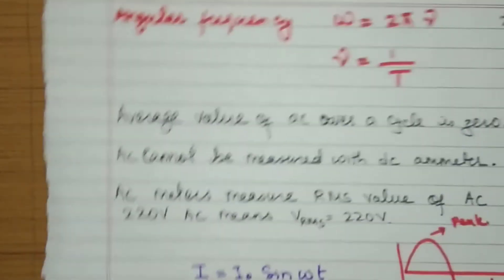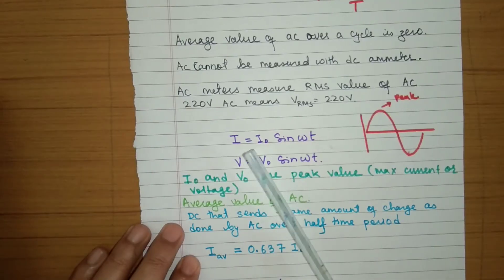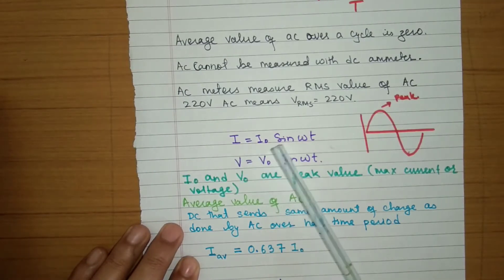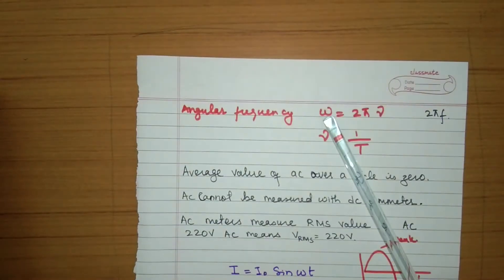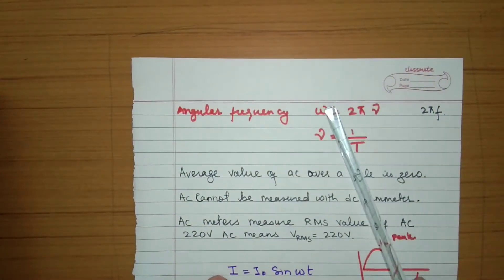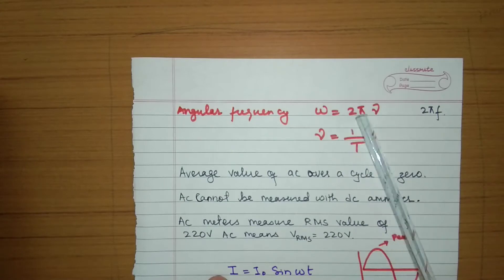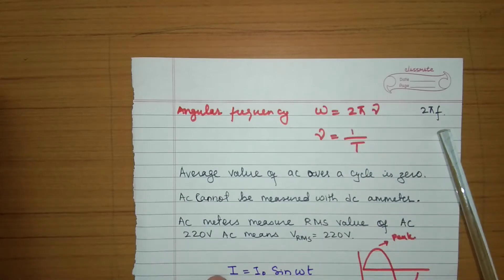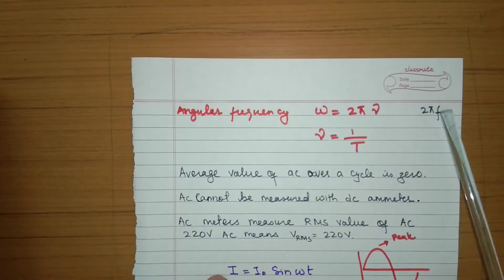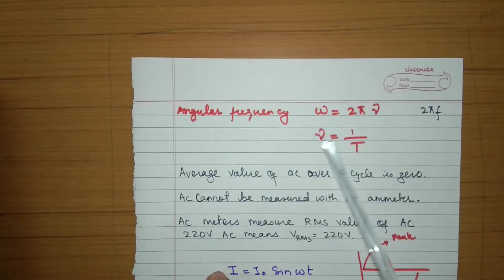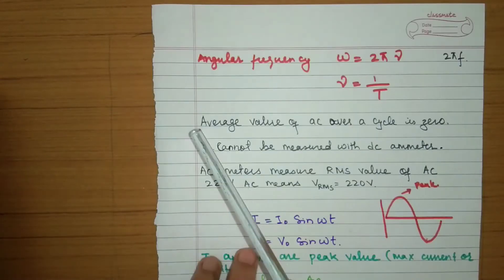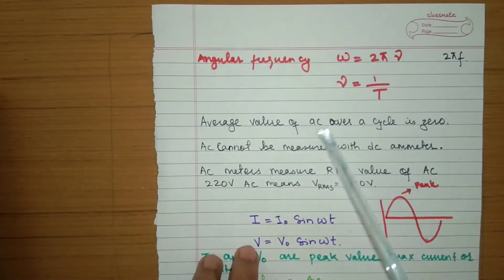The general equation of AC is given by I = I₀ sin(ωt) or V = V₀ sin(ωt), where ω is the angular frequency. Omega is given by 2π times frequency (ν), and frequency is 1 divided by the time period.